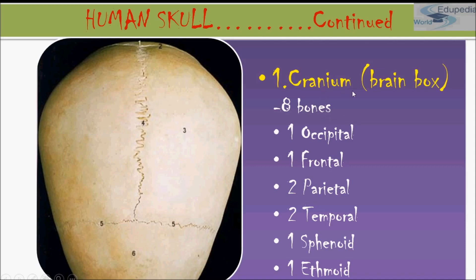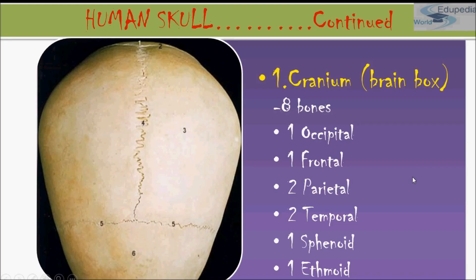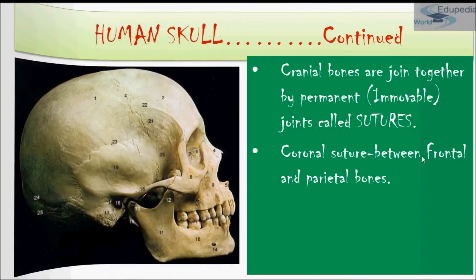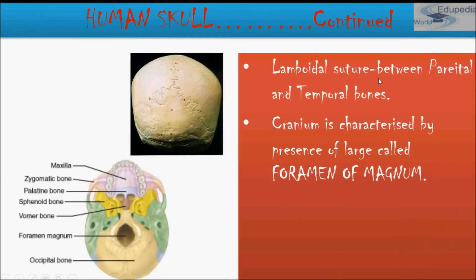The cranium is your brain box and consists of 8 bones: 1 occipital bone, 1 frontal bone, 2 parietal bones, 2 temporal bones, 1 sphenoid bone, and 1 ethmoid bone. Cranial bones are joined together by permanent immovable joints called sutures. Between parietal and frontal there is the coronal suture, and between parietal and temporal bone there is the lambdoidal suture.